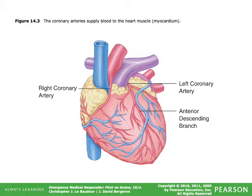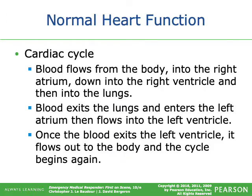The coronary arteries supply blood to the heart muscle, also known as the myocardium. In the cardiac cycle, blood flows from the body into the right atrium, down into the right ventricle, then gets pumped to the lungs. Blood exits the lungs, enters the left atrium, flows into the left ventricle, exits out to the body, and the cycle starts over.